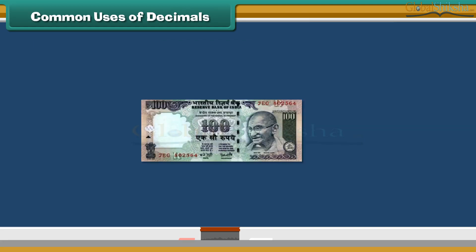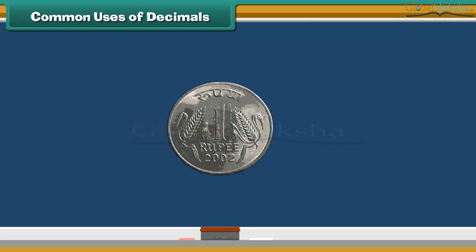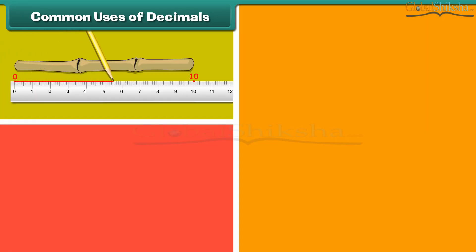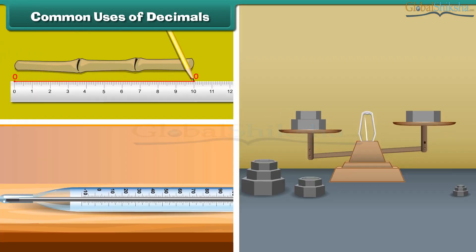Do you know, one rupee is just one hundredth of a hundred rupee? Isn't it interesting? We can also use decimals for the measurement, weight and temperature. Therefore, decimals are really very important.